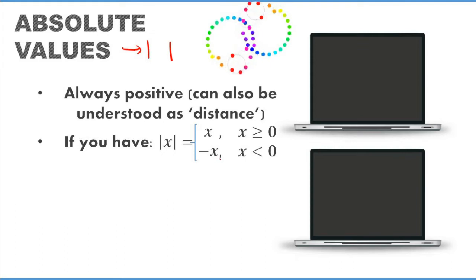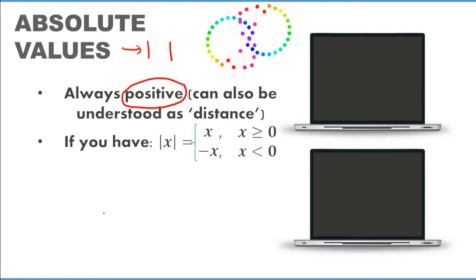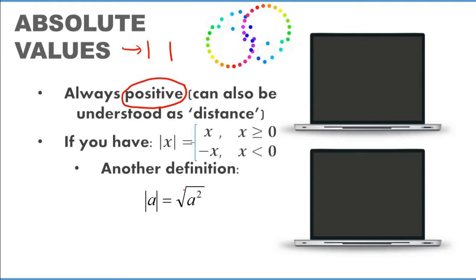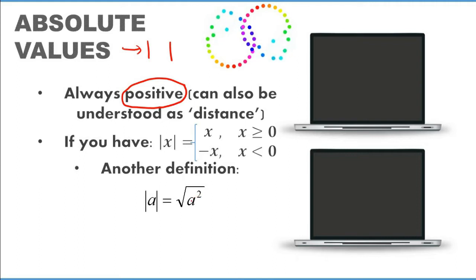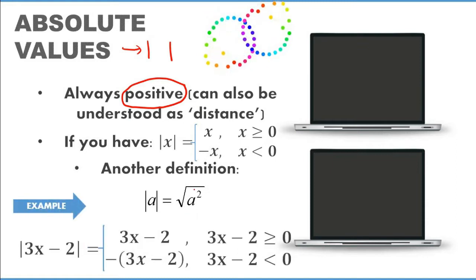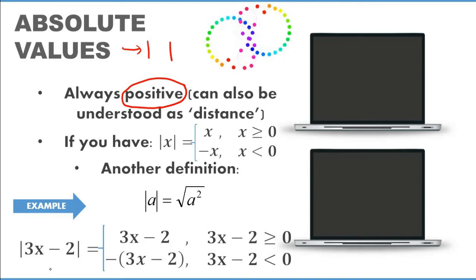Another definition is that the modulus of a is equal to the square root of a squared, because when you cancel off the square root that should give a positive number of a.